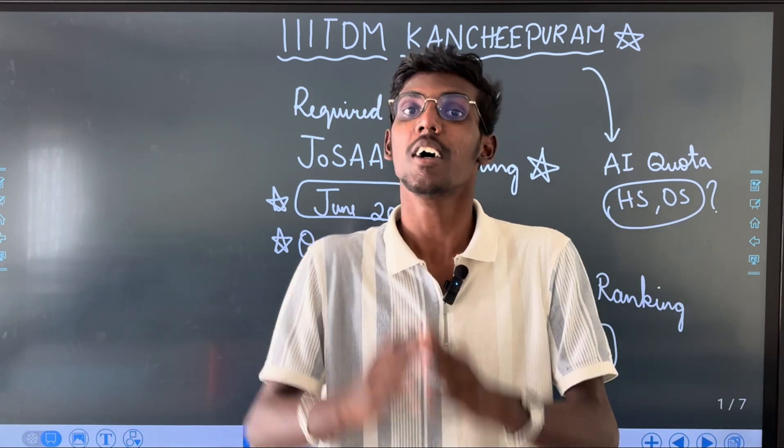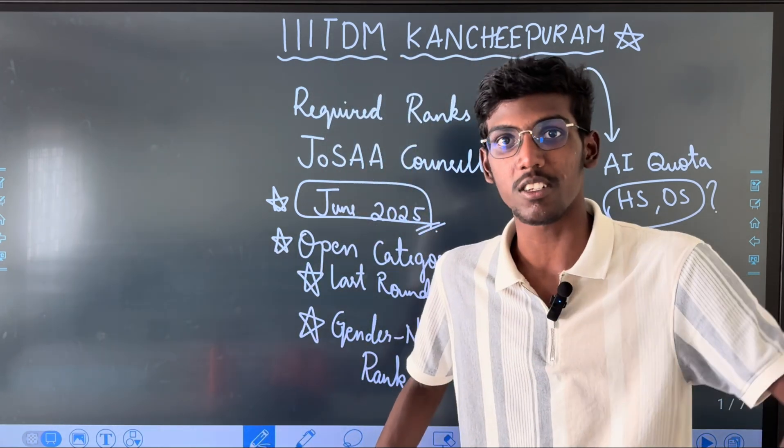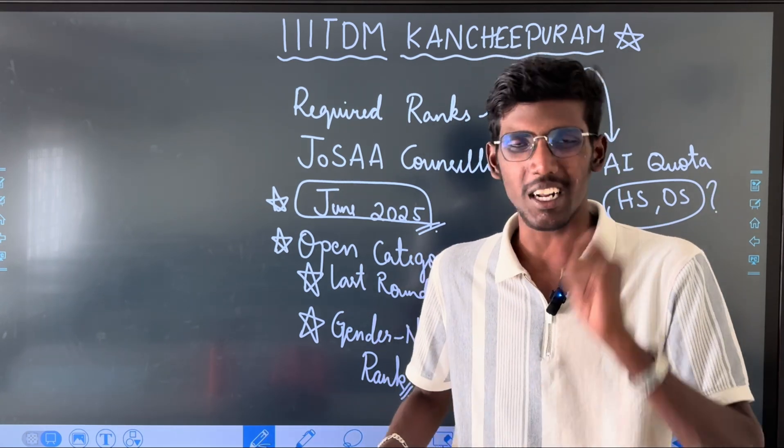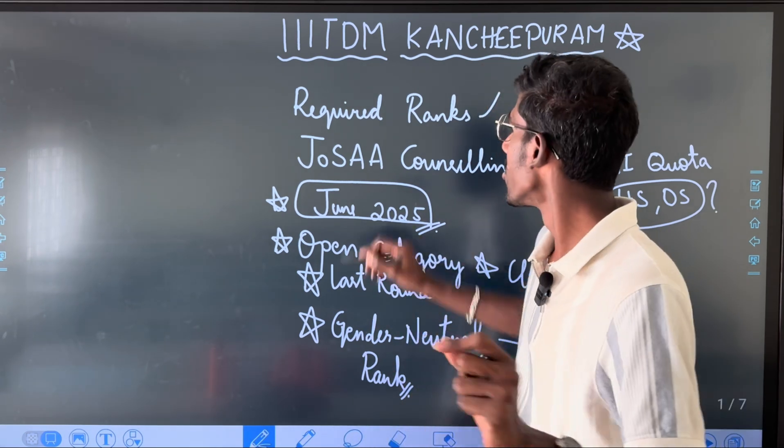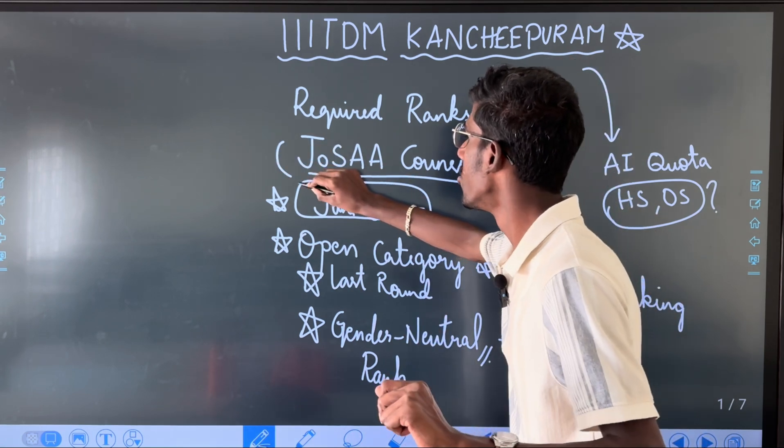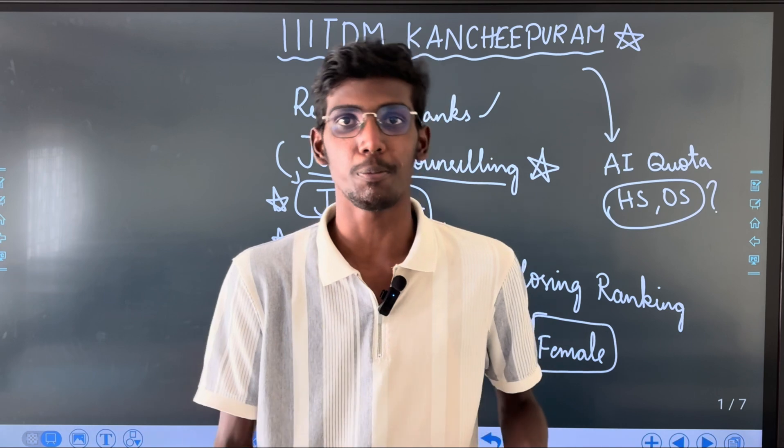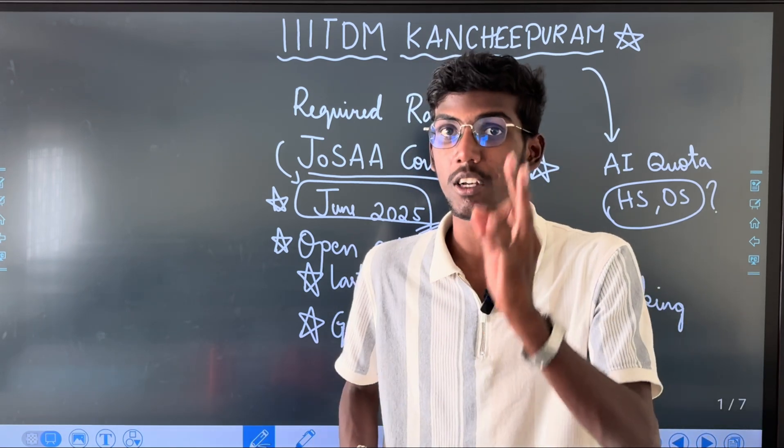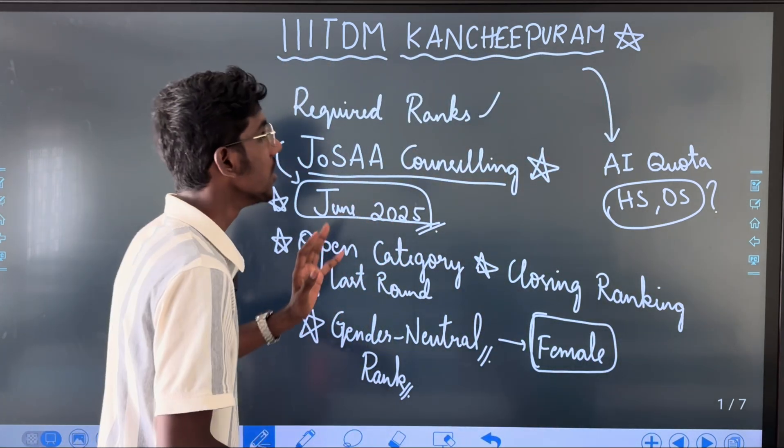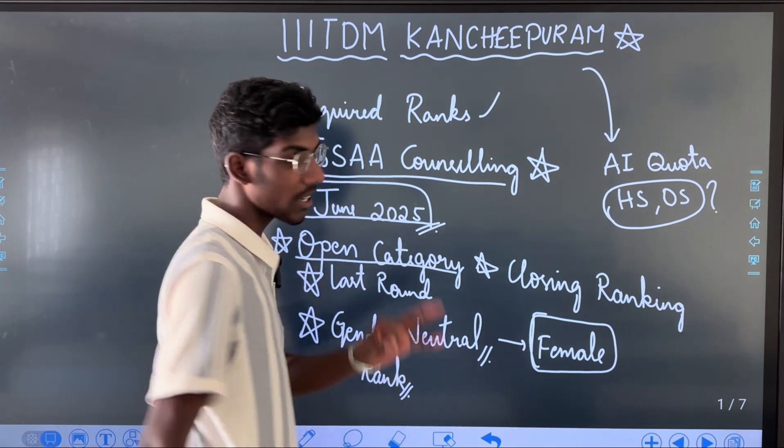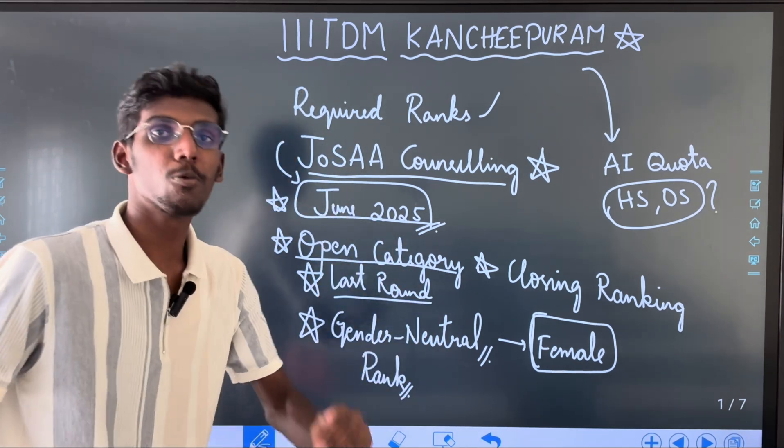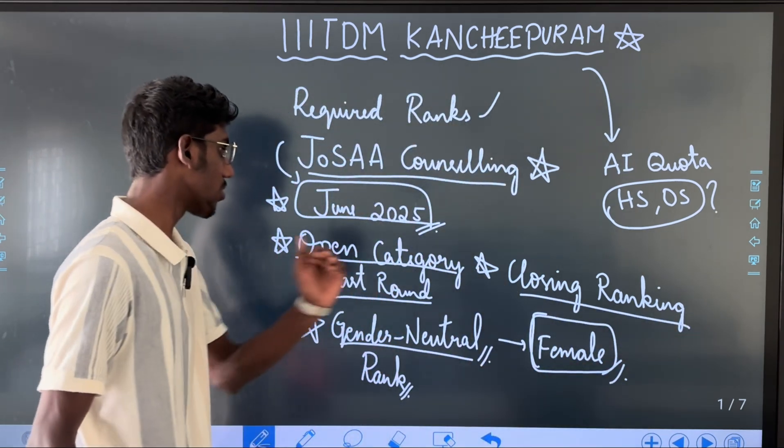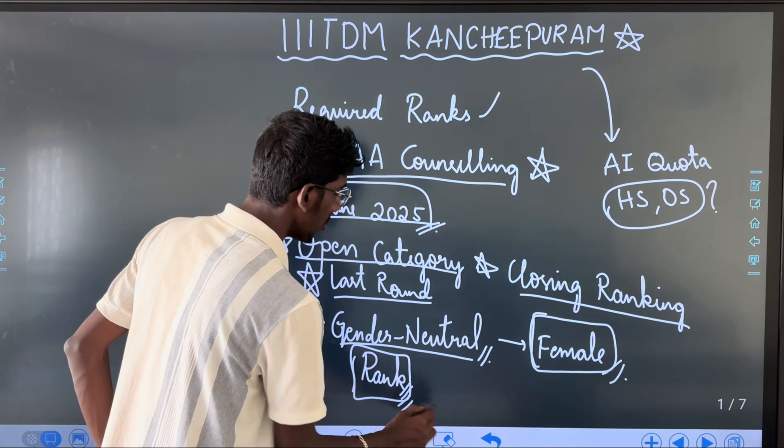We have the required ranks at this. If you don't have the required rank, this is the complete rank. JOSAA counseling starts in June. If you want to start in June, you can start the process day by day. What you want to do is check open category clear-cut rank. Next is the last round. Second is gender-neutral, then female category. Next is closing rank. These are the required ranks.